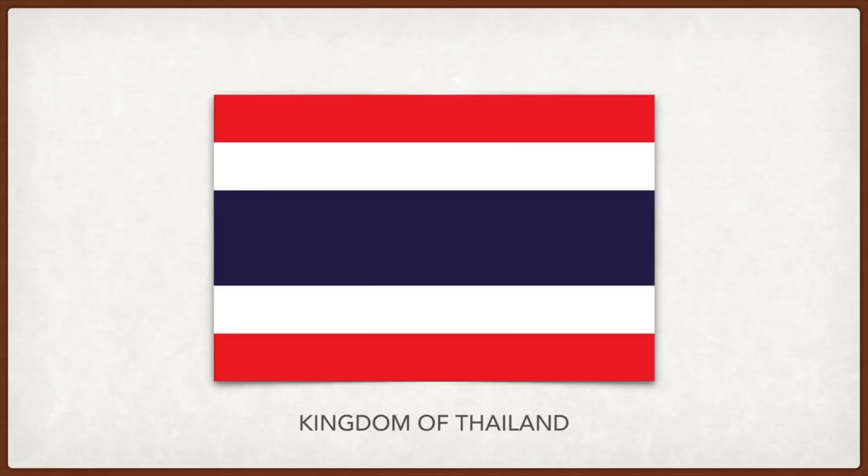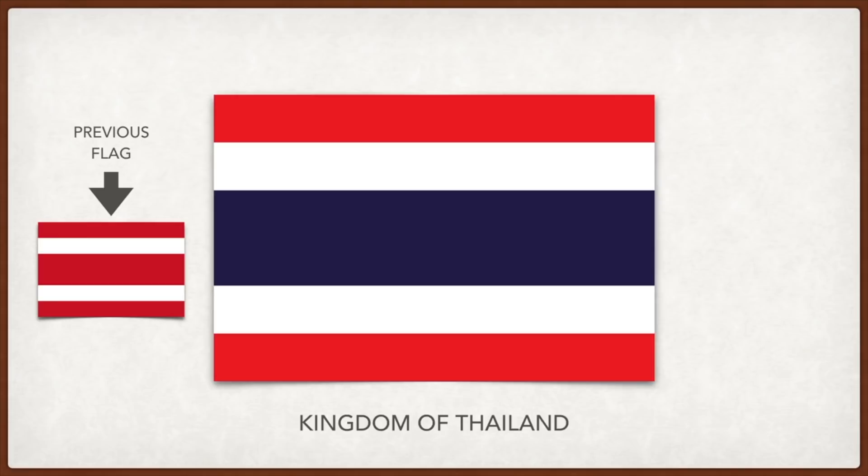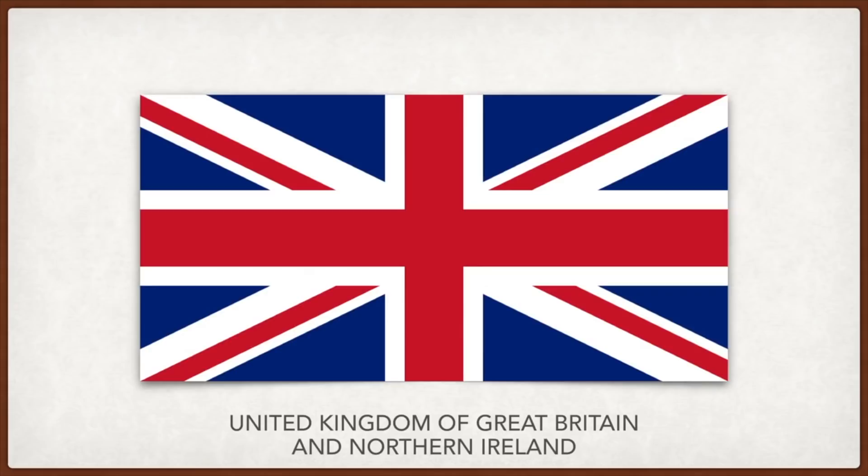Thailand: red stands for the land and people, white for religion, and blue for monarchy. Some sources say that blue was added during World War One to show solidarity with the allies — the US, France, and Britain.